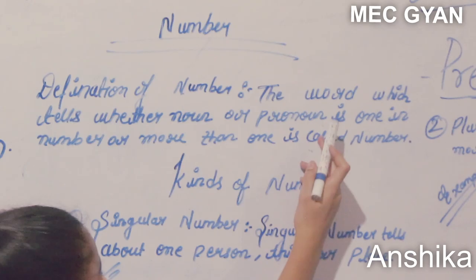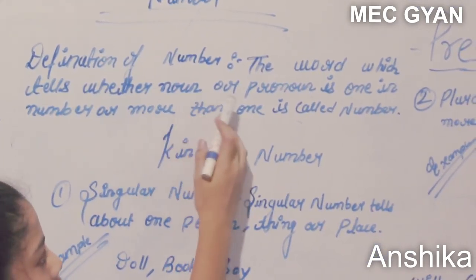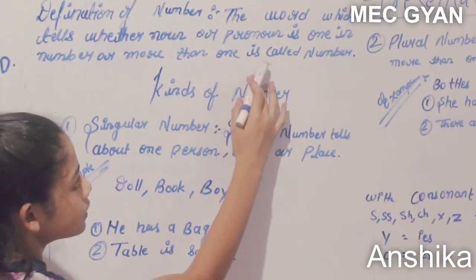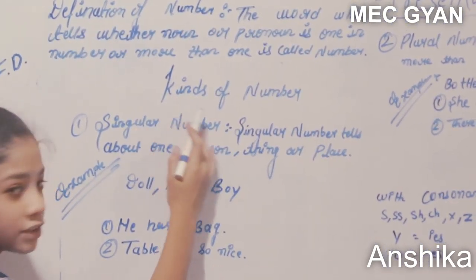Definition of number: The word which tells whether a noun or pronoun is one in number or more than one is called number. Kinds of number.